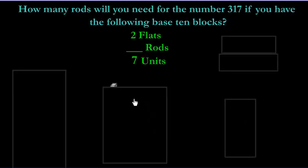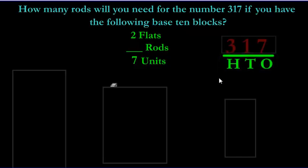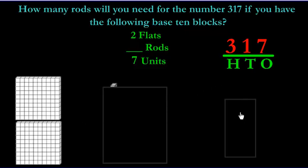And the last question. Let's see how this one works. It's similar to the last one. How many rods will you need for the number 317 if you have the following base 10 blocks? So now, we have 2 flats, blank rods, 7 units. First step, HTO. Put your 317 on it. And now let's draw it out. So we're going to put 2 flats, no problem. We're going to make our 7 units.